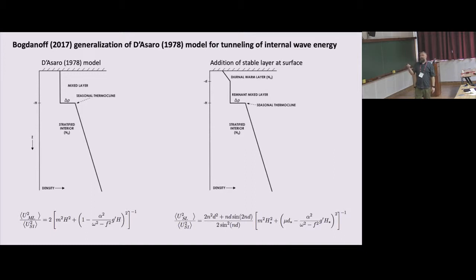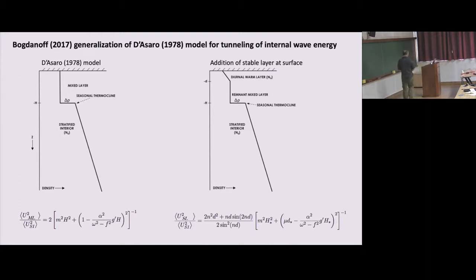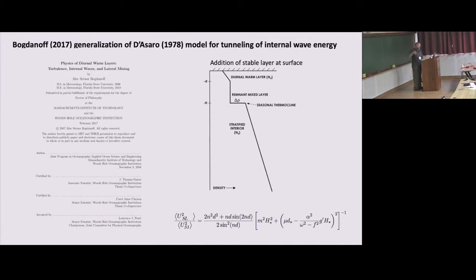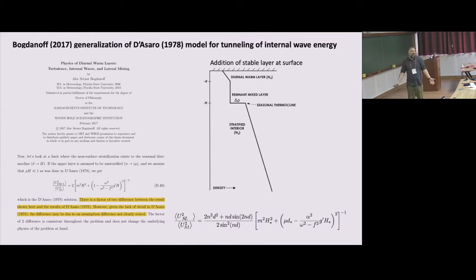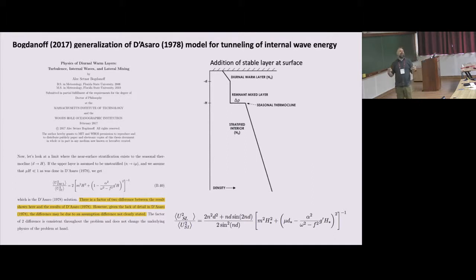There's a lengthy derivation in my former student's thesis. And to prove how smart he was, he actually found a discrepancy in Eric's formulation — it was basically a factor-of-two error, but my student was polite, so he said it was an assumption that Eric didn't explicitly cite. And that's fine, we can talk about it that way.